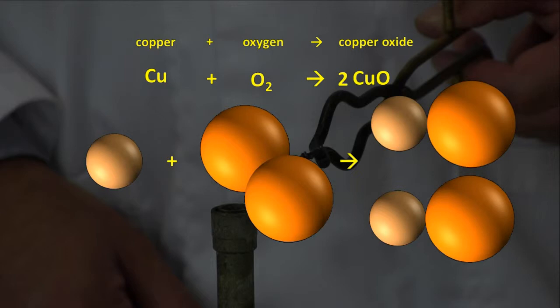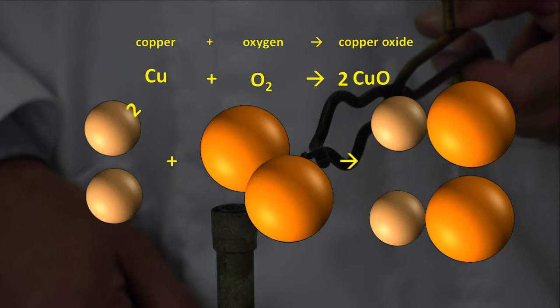So we need to put a two in front of the CuO. Now we have two Cu atoms on the right, so we need to go back and put a two in front of our Cu on the left. The equation is now balanced.